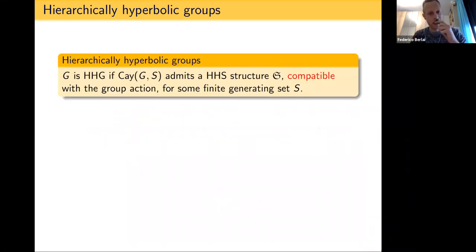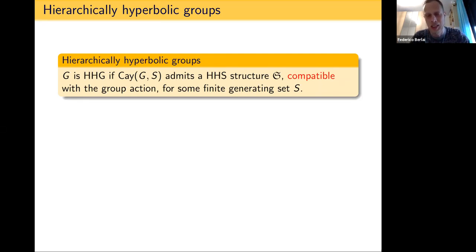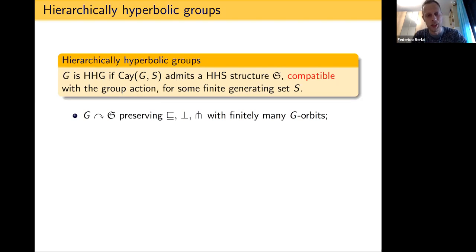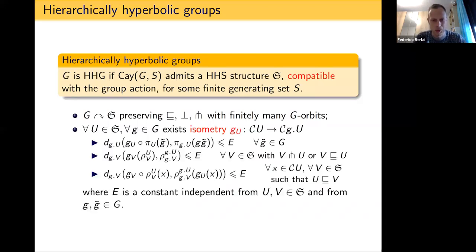Hierarchical hyperbolic spaces (HHSs) are the metric spaces for which this approach works, and HHGs are groups that act in a controlled manner on an HHS. Equivalently, a group is an HHG if its Cayley graph admits an HHS structure compatible with the group acting on itself by left multiplication — in particular, the group acts geometrically on an HHS with finitely many orbits on the family of hyperbolic spaces.